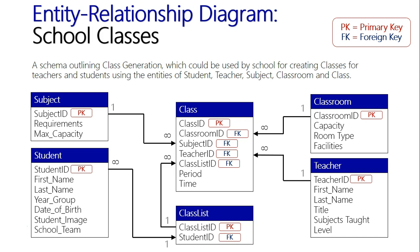Essentially, students and the class have a many-to-many relationship represented through the junction of the class list. This gives you an understanding of how a school database may generate classes — pulling data from different entities: the subject database, classroom database, teacher database, and student database; compiling class lists; and putting it all together to make classes of 25 to 30 students. With hundreds of classes in operation throughout the day across multiple periods and subjects, it's quite a big process, but this is how it may look in a schema format.